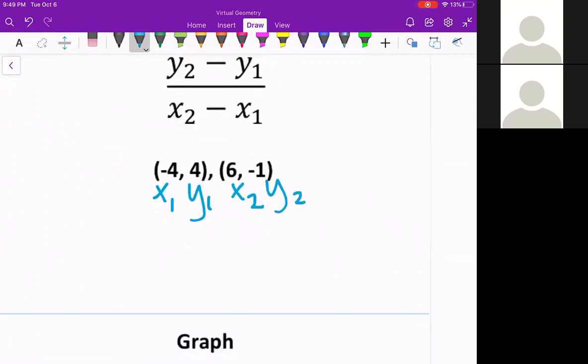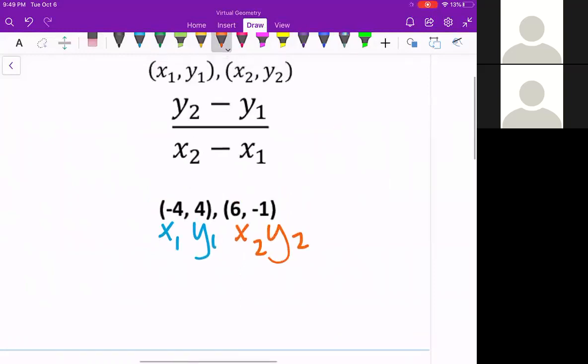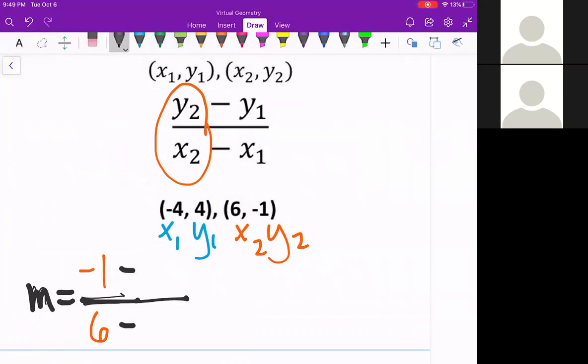So y₂ goes first, which is a negative 1. And here, to make this a little easier on the eyes, I'm going to change color. So x₂ and y₂. So I want y₂ and x₂ first for both of these fractions. So y₂ and x₂ first. So negative 1 and 6. We subtract from that x₁ and y₁. So y₁ on top. 4 and negative 4.